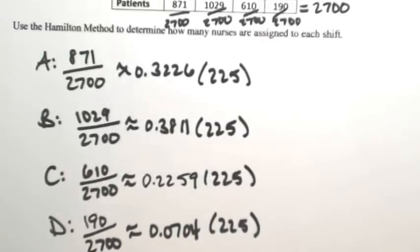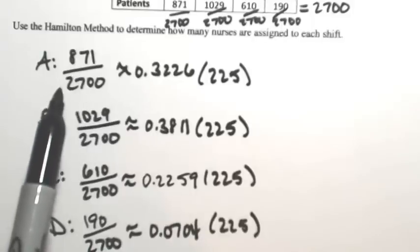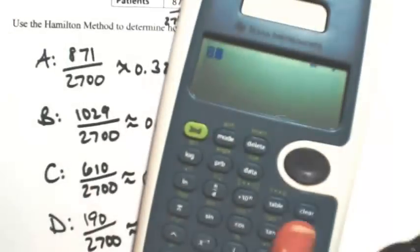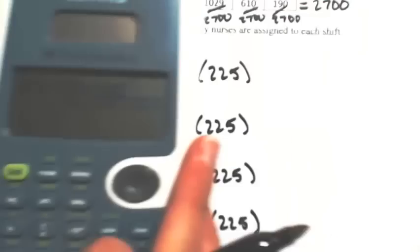To avoid any rounding errors, I think it might be a good idea to start from the 871 divided by 2,700 and just multiply that by 225. So 871 divided by 2,700 times 225 is about 72.583.